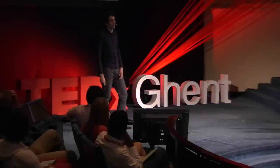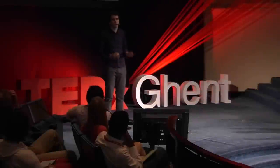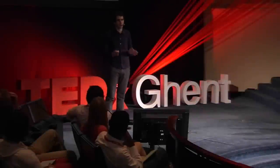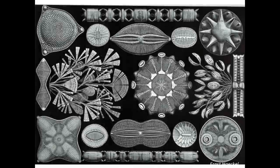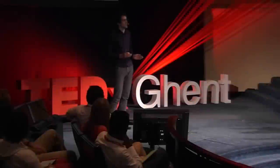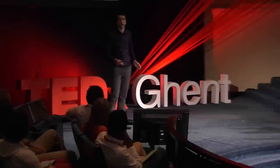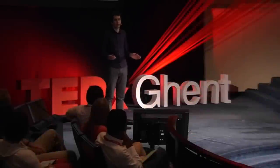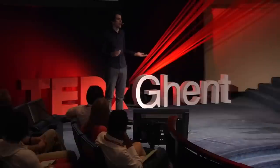What are these diatoms that I'm talking about? Well, they are very small micro-algae. They're only a few micrometers in diameter, but they make up for their small size by their numbers. There are more than 10,000 species, and altogether there are billions of them in the ocean and in about any other puddle of water.